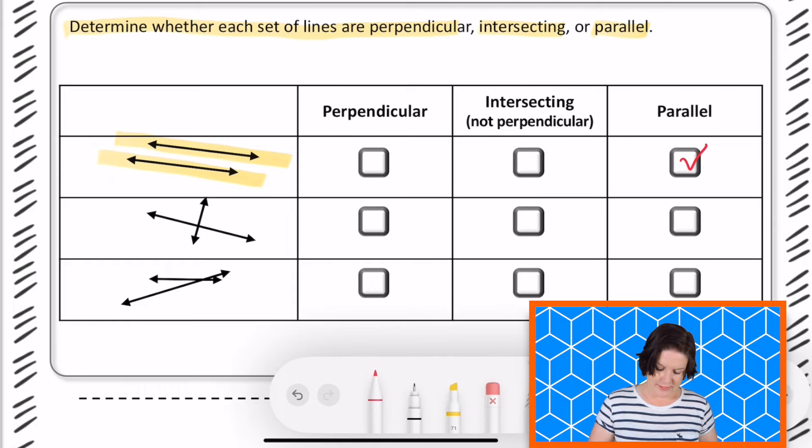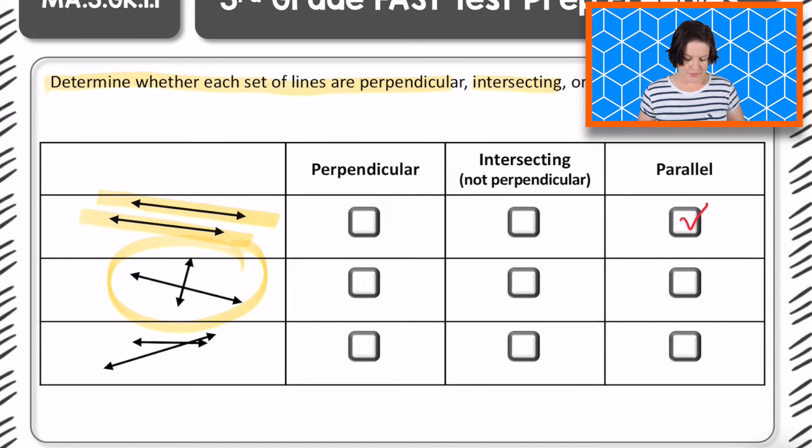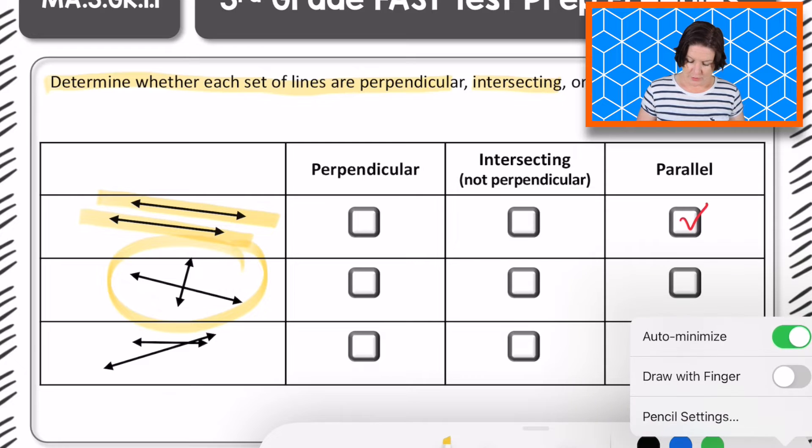All right, next up is this pair of lines right there. Now to me, they kind of look like they could be perpendicular. I'm noticing the square corner, I think. Now I'm guessing at that first, but I want to make sure. Now when you are taking your fast math test, you should have some things in front of you, like your reference sheet and scratch paper. And both of those things should have square corners on the tips of the paper. So we're going to pretend like we're using that today.